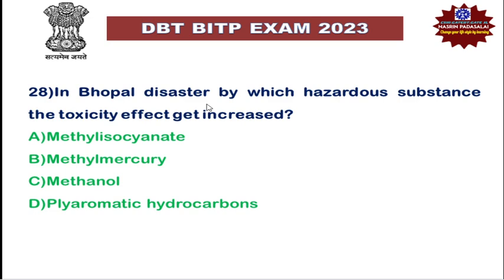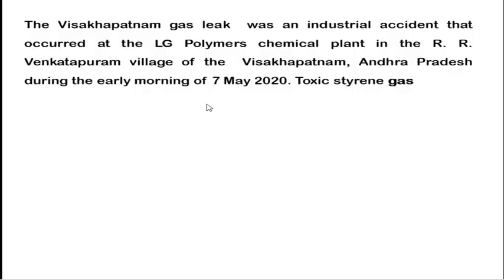Next: in the Bhopal disaster, which hazardous substance caused the toxic effect? The Bhopal disaster was an industrial accident that occurred on December 3rd, 1984, where nearly 40 tons of methyl isocyanate gas leaked from the Union Carbide plant in Bhopal. Methyl isocyanate is a gas generally used for producing rubbers and adhesives; it is highly toxic and extremely irritating. Recently, a similar chemical accident occurred in Vishakhapatnam — the Vizag gas leakage — at an LG Polymers chemical plant, where styrene gas leaked on May 7th.